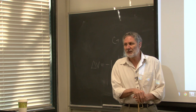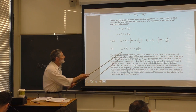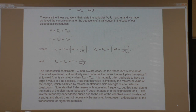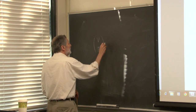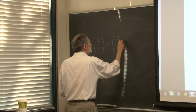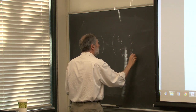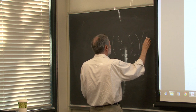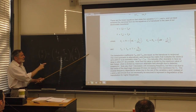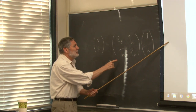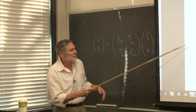This transducer obeys reciprocity and an equivalent electrical circuit exists. People often use the word 'symmetric' here because in matrix form — with rows [V, F] and columns [I, u] — equal transduction coefficients T_em = T_me give a symmetric matrix.